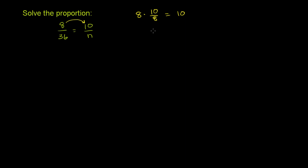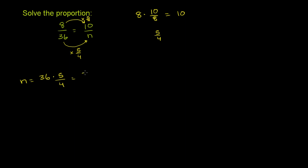Another way to write 10/8: 10 over 8 is the same thing as 5 over 4. So we're multiplying by 5/4 to get from 8 to 10. If we did that to the numerator, in order to have an equivalent fraction you have to do the same thing to the denominator — multiply it times 5/4. So this n is going to be equal to 36 times 5 divided by 4.